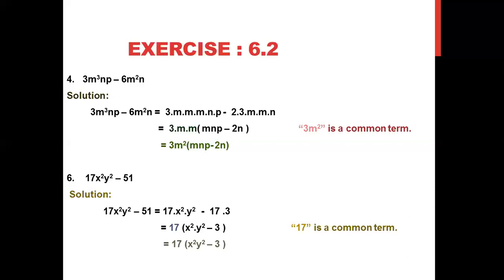Question 5: Factorize 17x²y² - 51. The factor of 17 is only 17×1, and the factors of 51 are 17×3. So we write 17·x²·y² minus 17·3. The common term is only 17 — no variable is common because 51 has no variable with it. So we take 17 common and get: 17(x²y² - 3). Our answer is 17(x²y² - 3), mentioning that 17 is the common term.